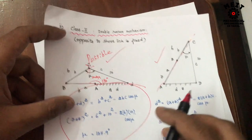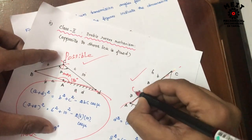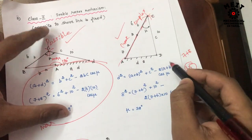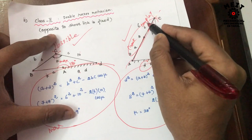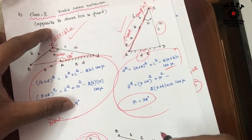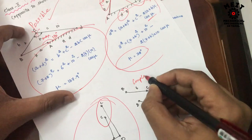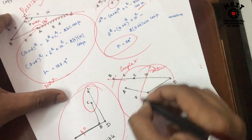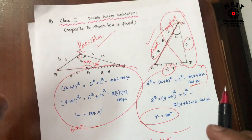For Class 1 mechanisms, both 180-degree and 0-degree configurations are always achievable. For Class 2 mechanisms, sometimes these configurations are not possible. If the zero-degree diagram is not achievable for the given dimensions, we try making the crank and coupler in a straight line. When that diagram is possible, we use the cosine formula with opposite side (a+b): d² = (a+b)² + c² − 2(a+b)c cos μ.